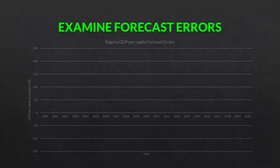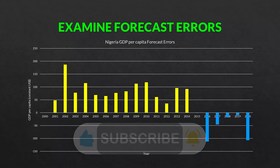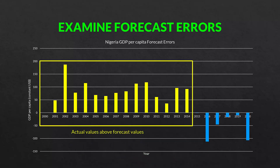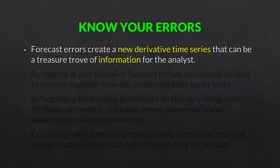We always want to look at our forecast errors visually. The forecast errors for this time series show that on the left, the errors are positive — the actual values are above the forecast values. On the right-hand side, the values are negative, meaning the actual values are below the forecast values. By looking at the magnitude and the sign of the forecast errors, we can learn a lot about the underlying time series. Forecast errors create a new derivative time series that can be a treasure trove of information for the analyst.